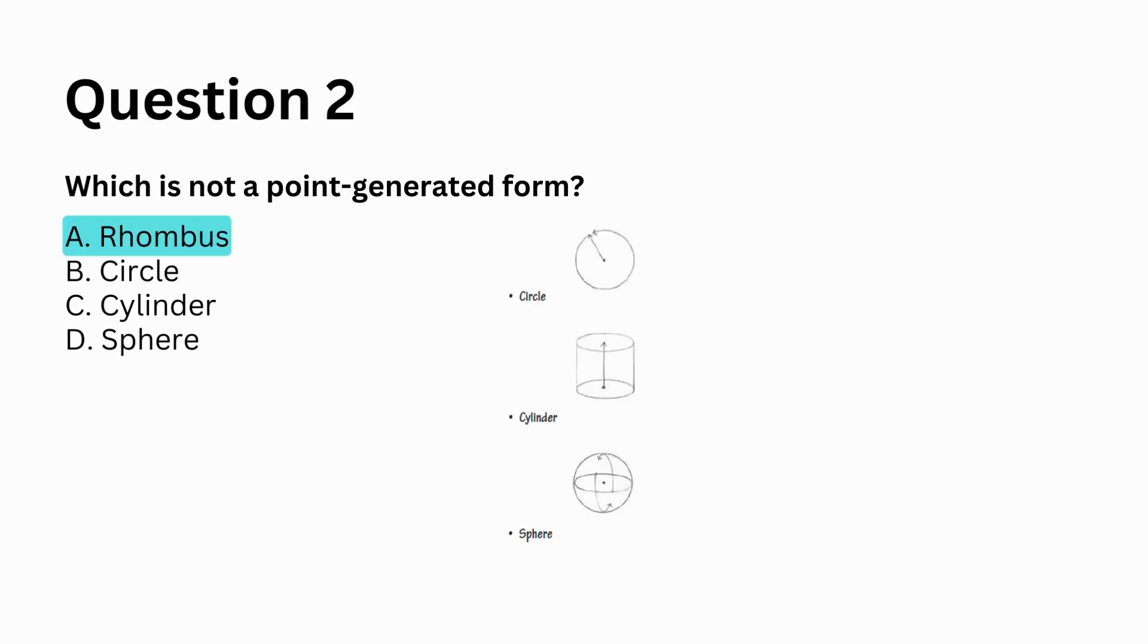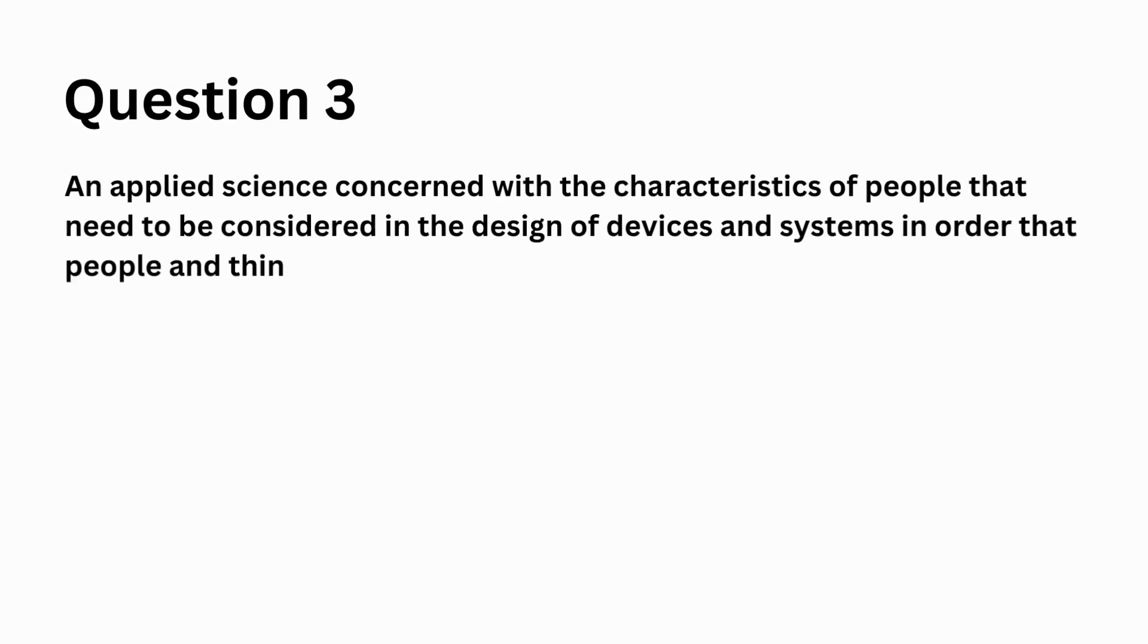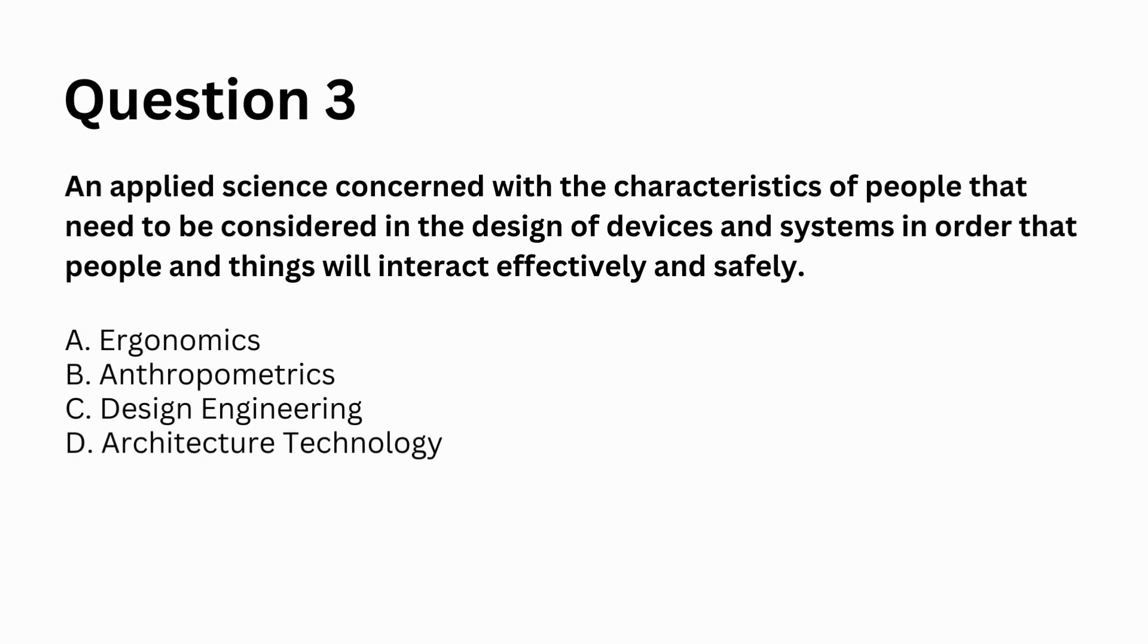A. rhombus. An applied science concerned with the characteristics of people that need to be considered in the design of devices and systems in order that people and things will interact effectively and safely. A. ergonomics, B. anthropometrics, C. design engineering, D. architecture technology. Answer: A. ergonomics.